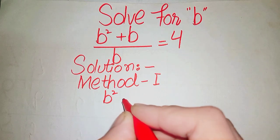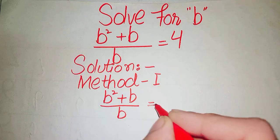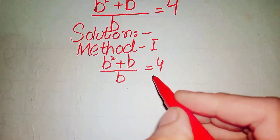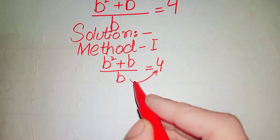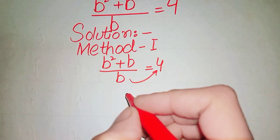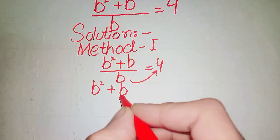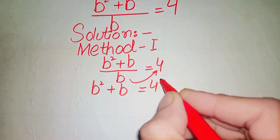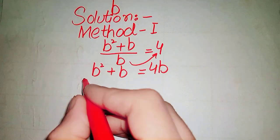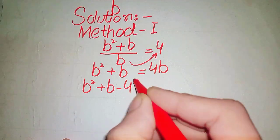In Method 1, we start with (b squared + b) over b = 4. Taking b to the right side, it multiplies with 4, giving us b squared + b = 4b. Rearranging, we get b squared + b minus 4b = 0.